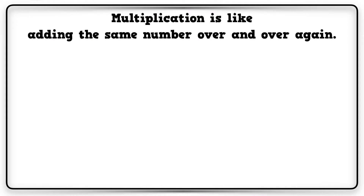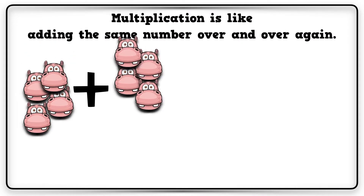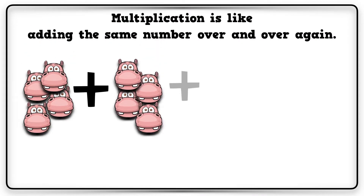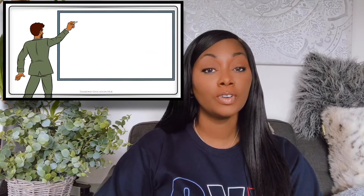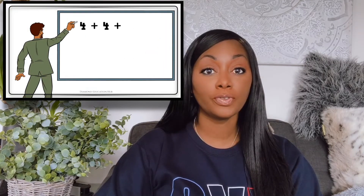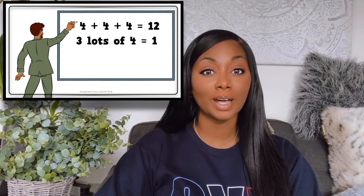Multiplication is like adding the same number over and over again. 4 plus 4 plus 4 is 12. 3 lots of 4 are 12, and 3 times 4 is 12.